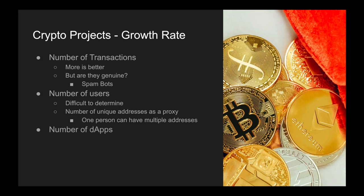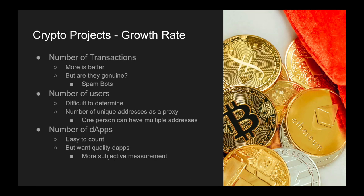Then there are the number of dApps. What's nice here is this is easy to count, as a lot of blockchains boast about the number of decentralized applications built on them. However, sometimes it's not the quantity of dApps but the quality of dApps — and this becomes a very subjective measurement. Sometimes you can have a dApp with lots of transactions, like the Sunflower situation on Polygon, but it was seen more as spam than something actually bringing utility. The quality of dApps is another subjective measure, and there was debate in the community regarding that.